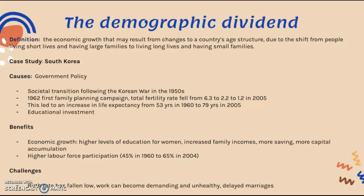A key case study is South Korea. The causes of its demographic dividend include the societal transition following the Korean War in the 1950s. One of the main developments was the 1962 first family planning campaign in Korea, which led to the total fertility rate falling from 6.3 to 2.2, and then to 1.2 in 2005.